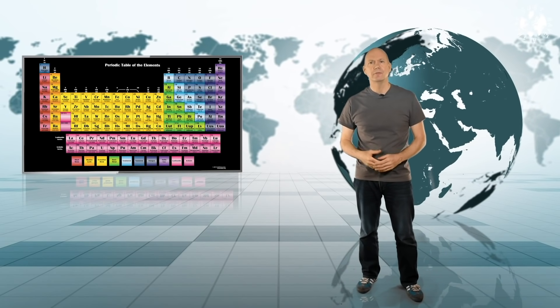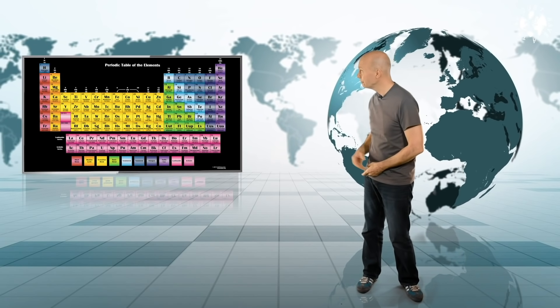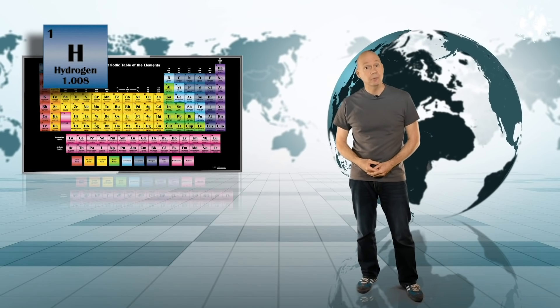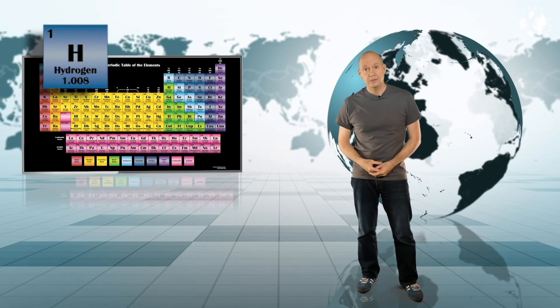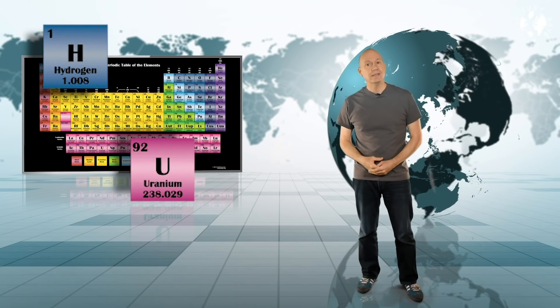Now this next bit gets a bit sciency and I'm not a scientist as many of you remind me each week. So let's just give it a go and see how we get on. This is the periodic table starting with the lightest element hydrogen up there. As you get further down the table you get elements with more and more protons until you get right down there where you find uranium with 92 protons.